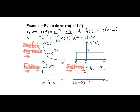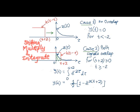In the next step, we start shifting h of tau over x of tau which is fixed.